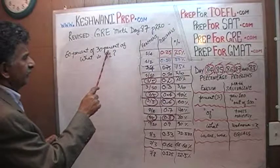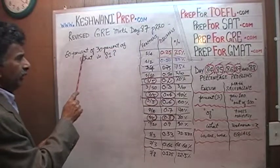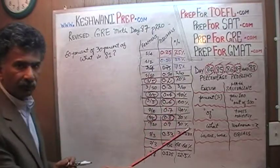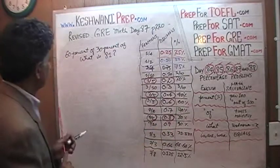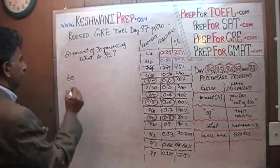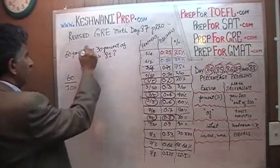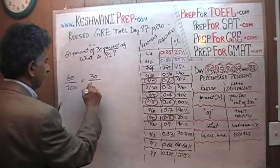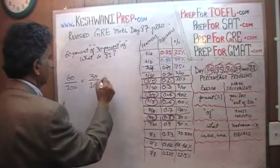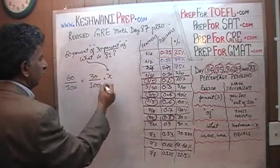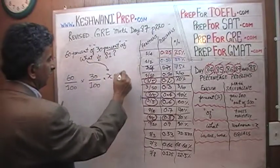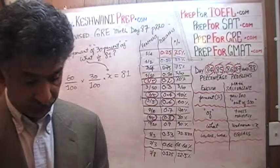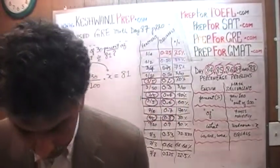60 percent of 30 percent of what is 81? All we are going to do is translate this sentence from English to mathematics using our dictionary, which consists of only four words: percent, of, what, and is. 60 percent means over 100. Of means times. 30 percent means over 100. Of means times. What — we replace with x. Is means equal. 81. There we go — we have our equation. That is the most important part: having the right equation. If you have the right equation, the rest is downhill.